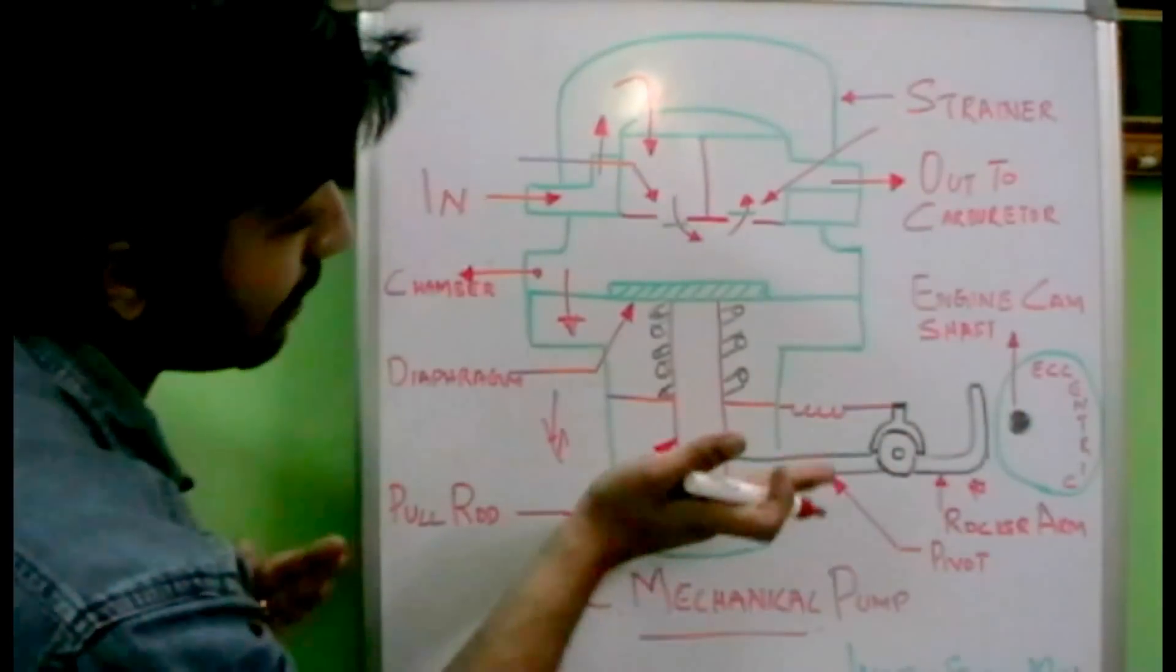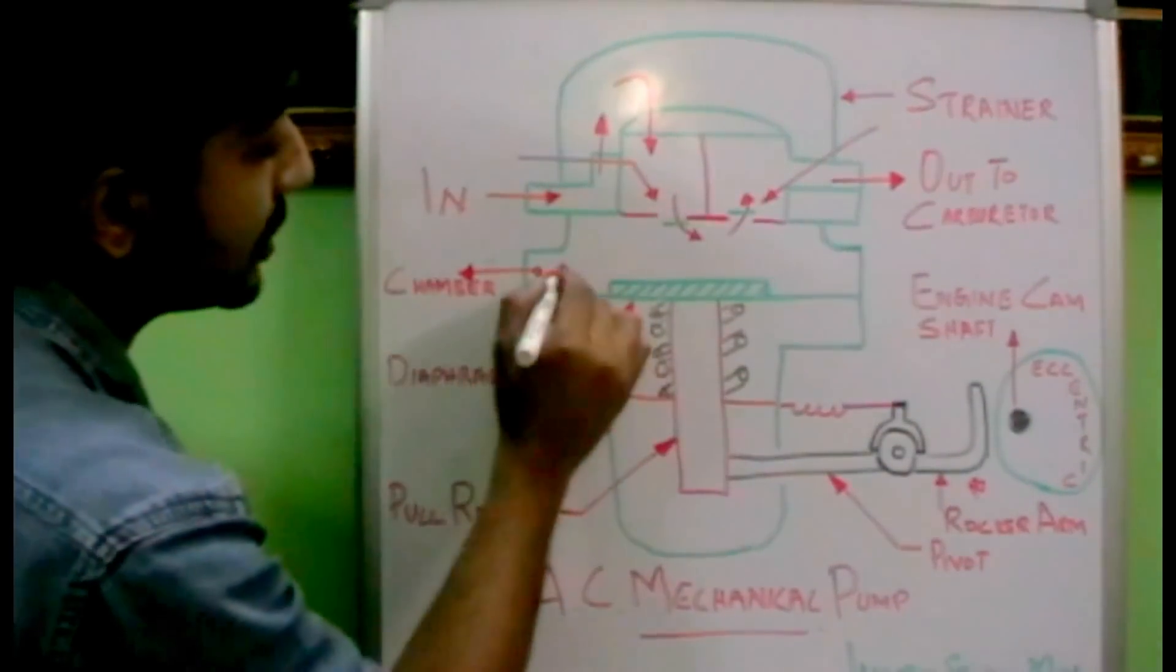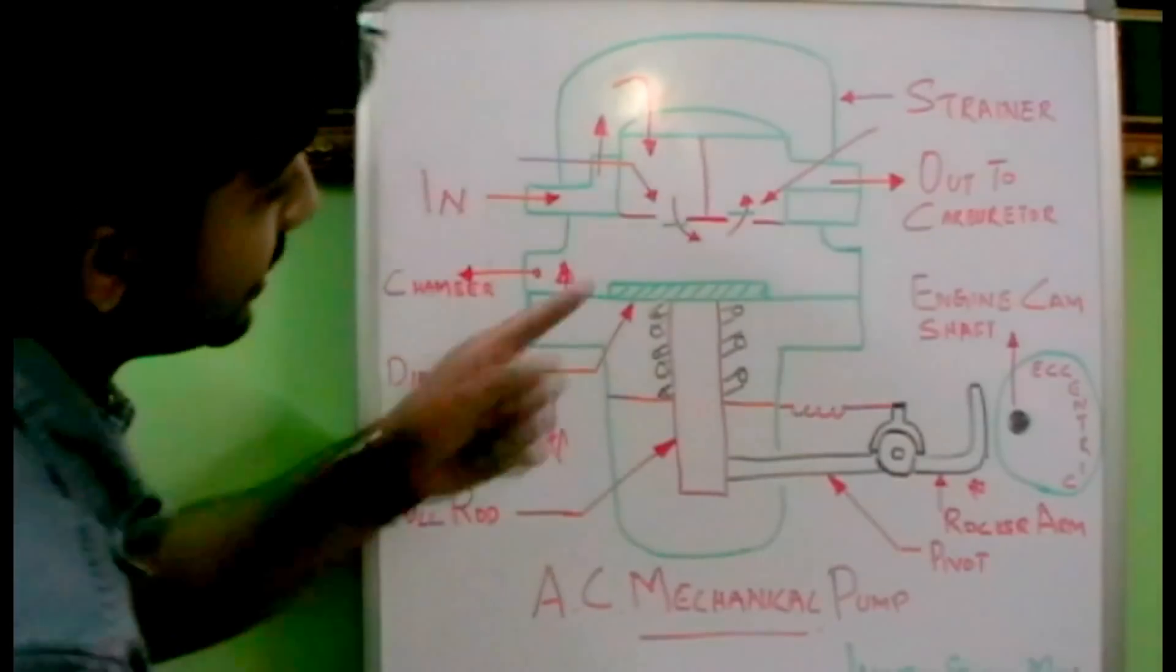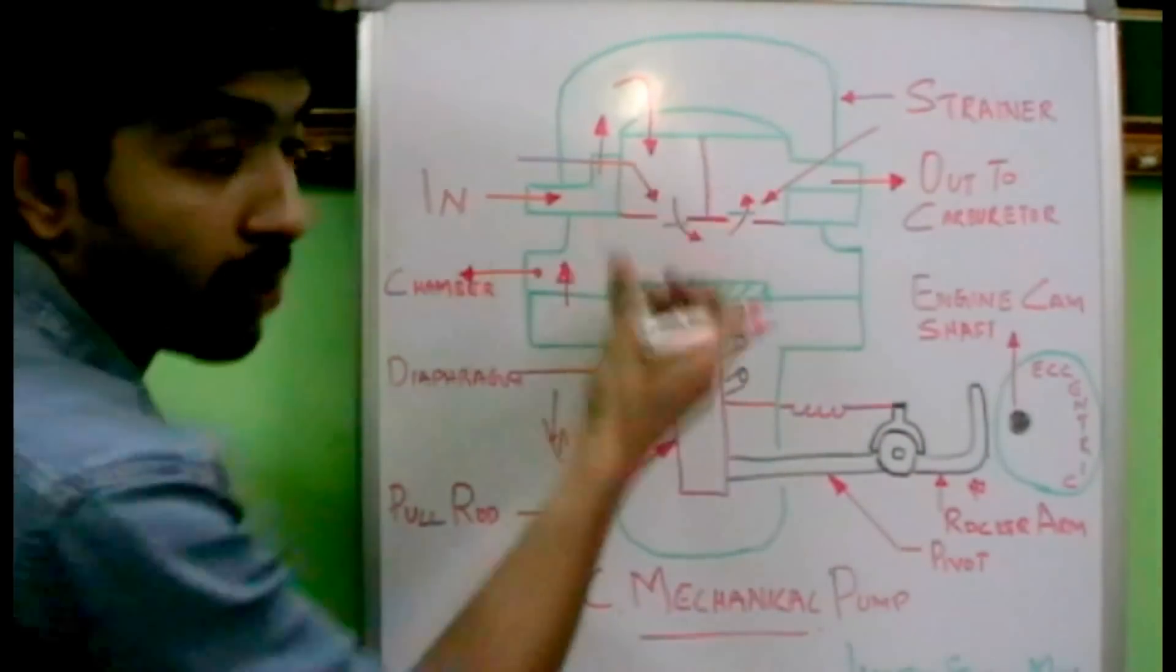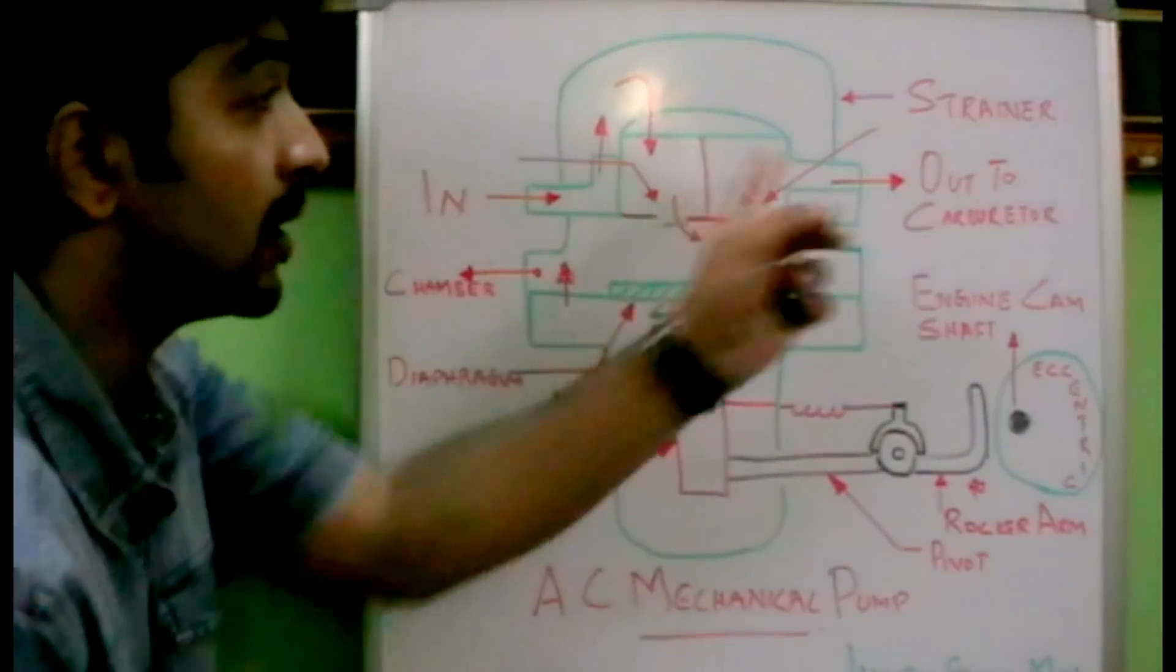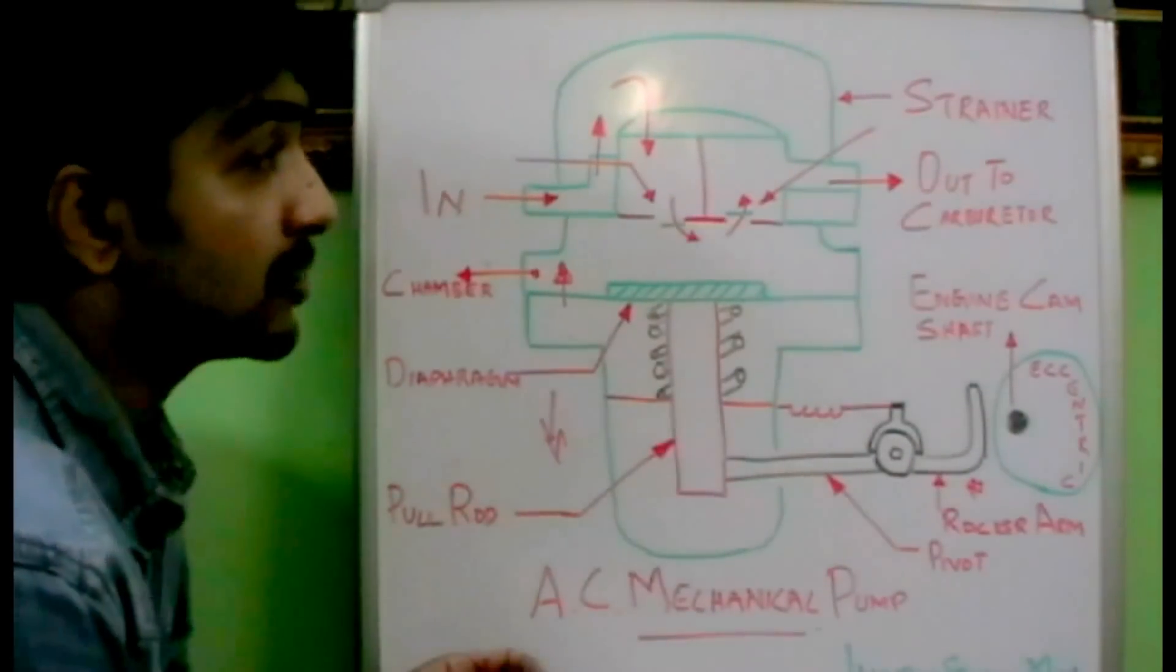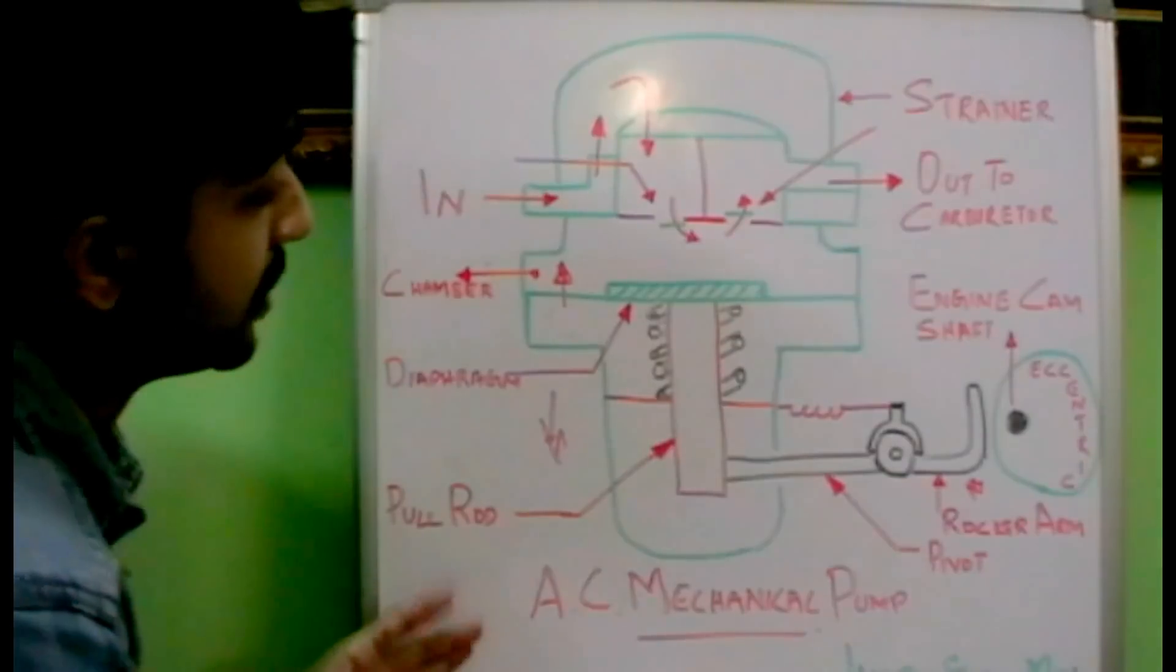And as the next rotation, the rocker arm is again activated and the diaphragm moves up. As the diaphragm moves up, the inlet valve closes and the outlet valve opens. So this oil which is sucked inside the chamber is delivered towards the carburetor through the outlet. That's how simply this AC mechanical pump functions.